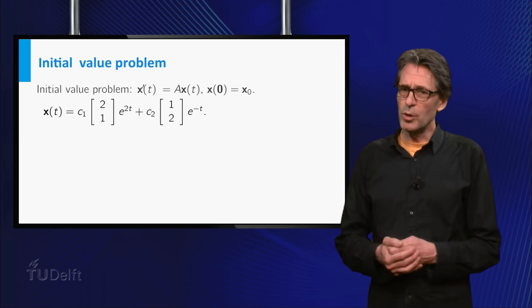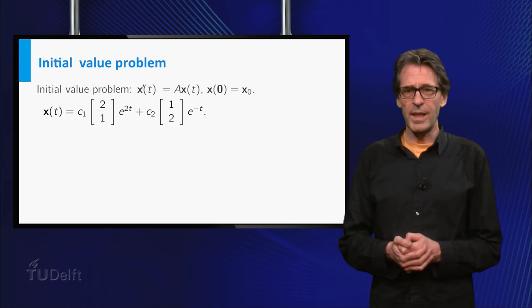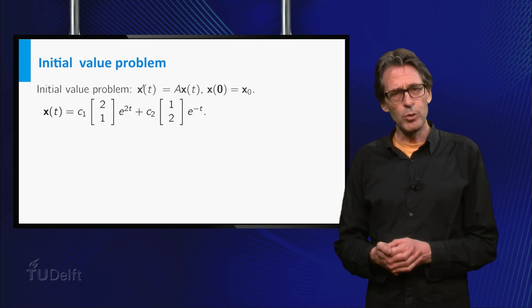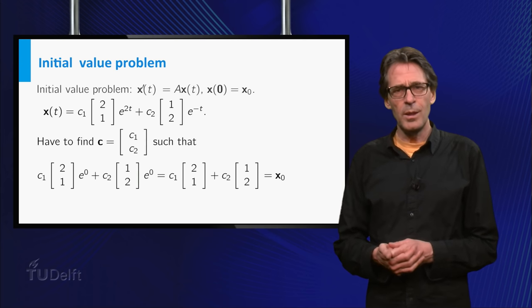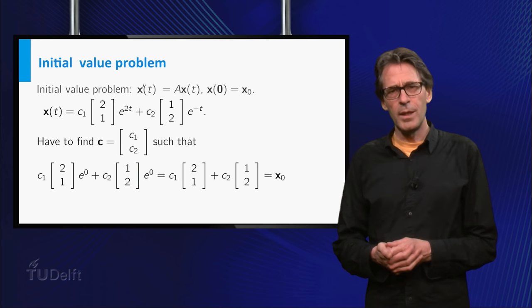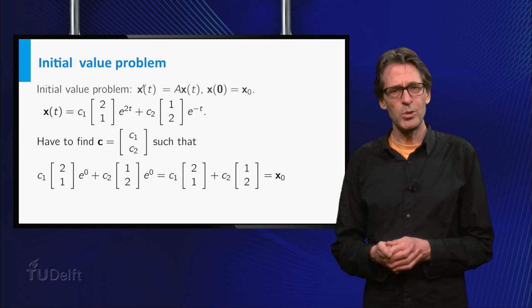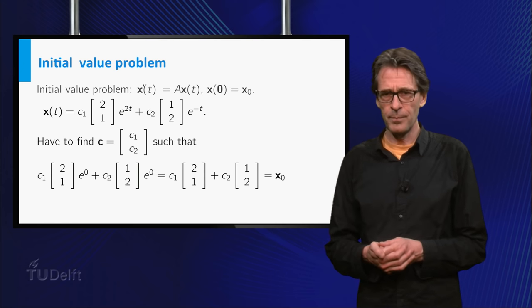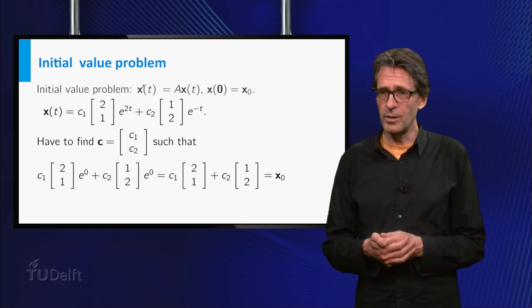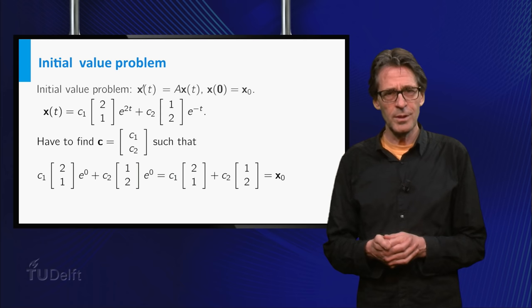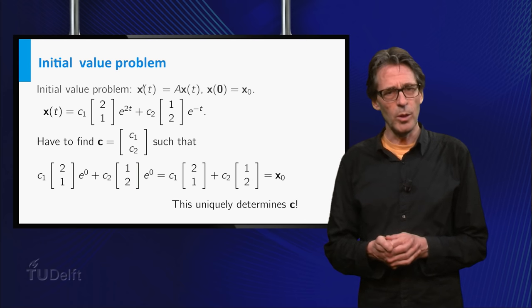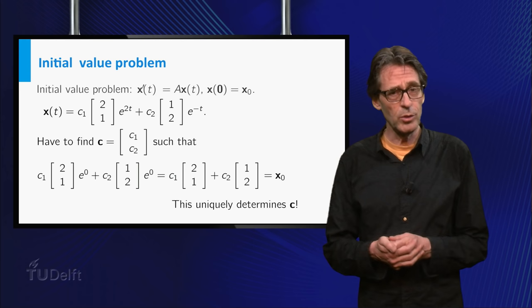If you want a solution starting from a given position x₀ at t equals zero, you have to solve c₁v₁ plus c₂v₂ equals x₀. Note that the exponentials simplify to e to the zero equals 1. Since the vectors v₁ and v₂ are independent, this uniquely determines c₁ and c₂ for any initial position x₀.